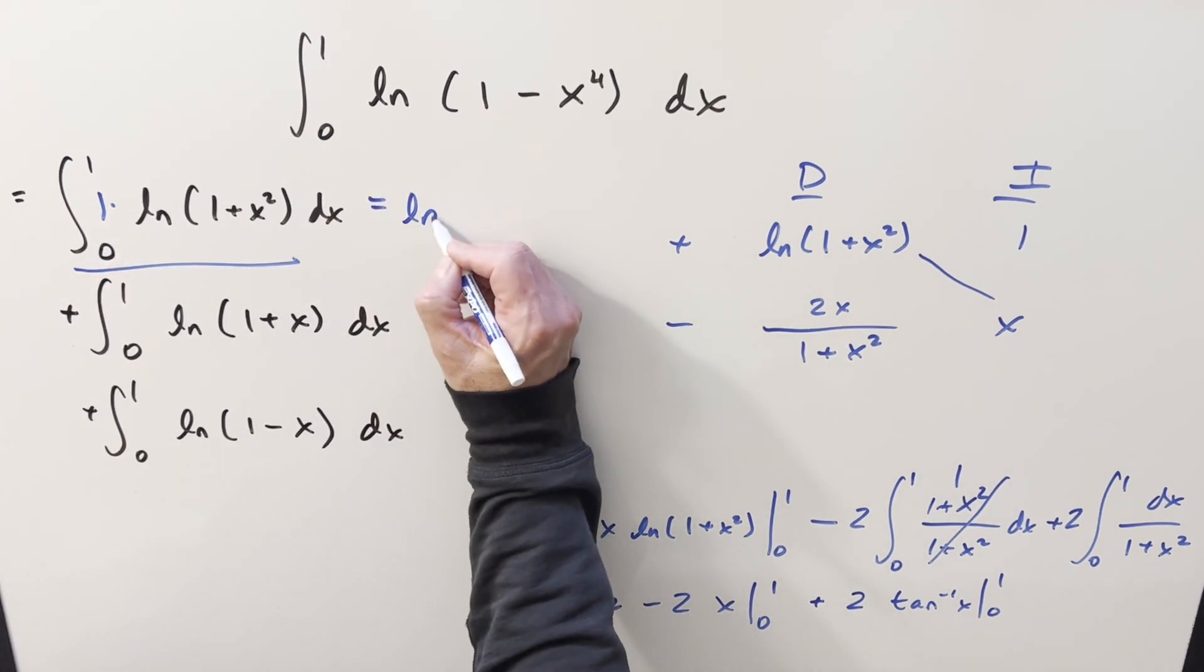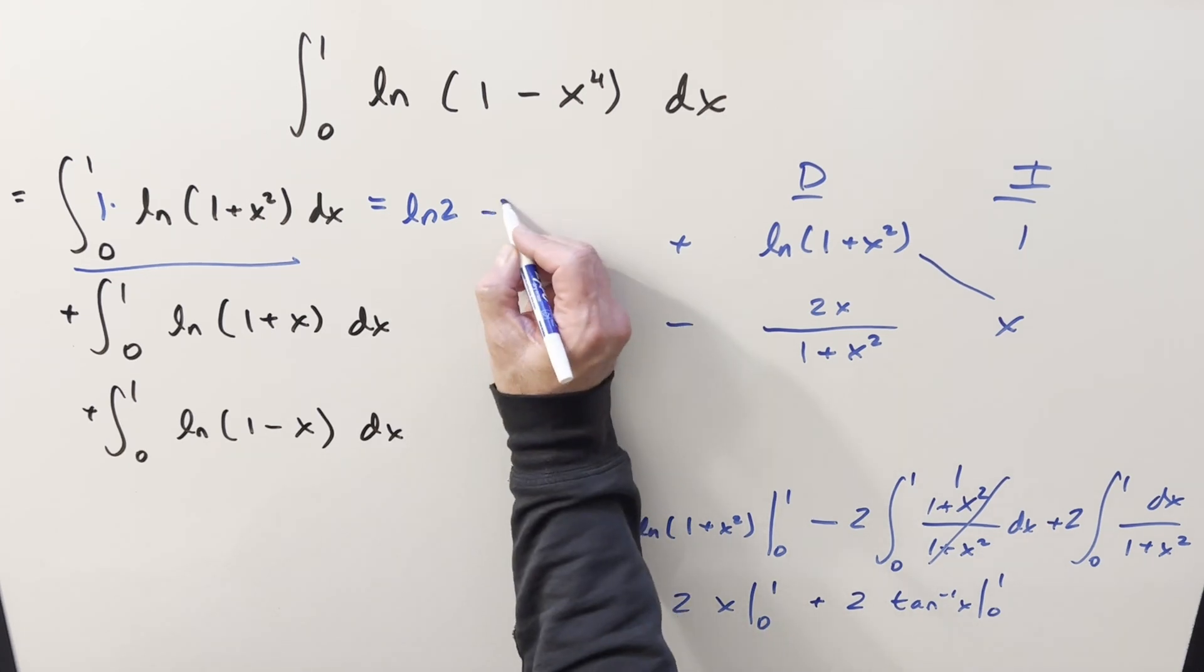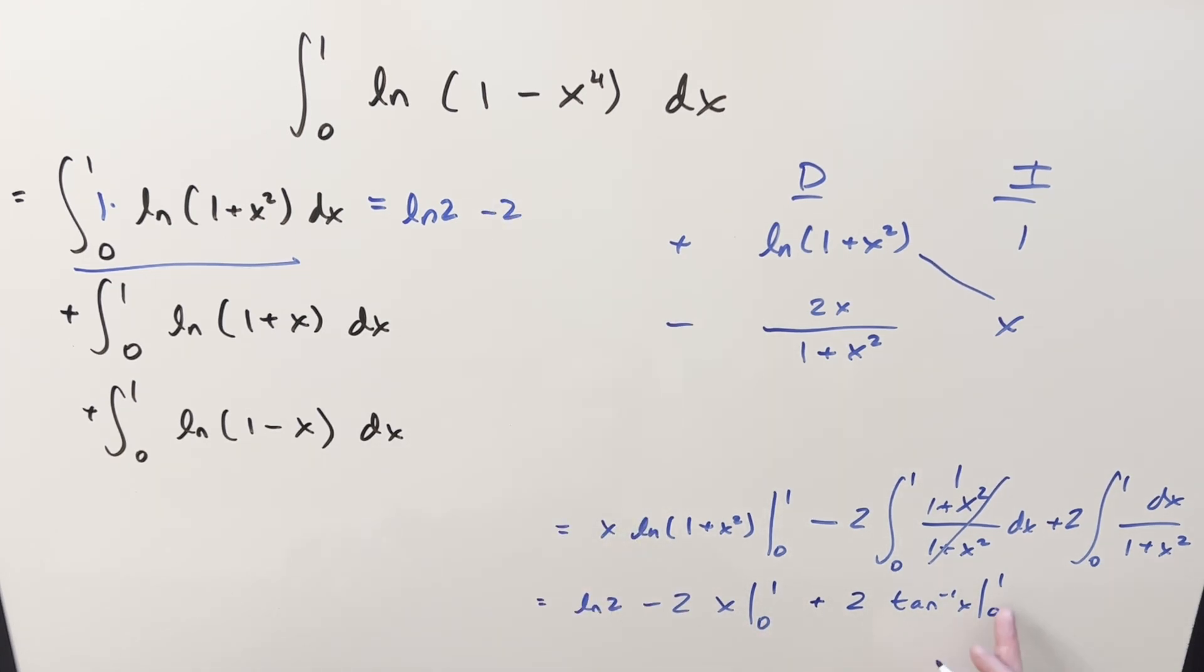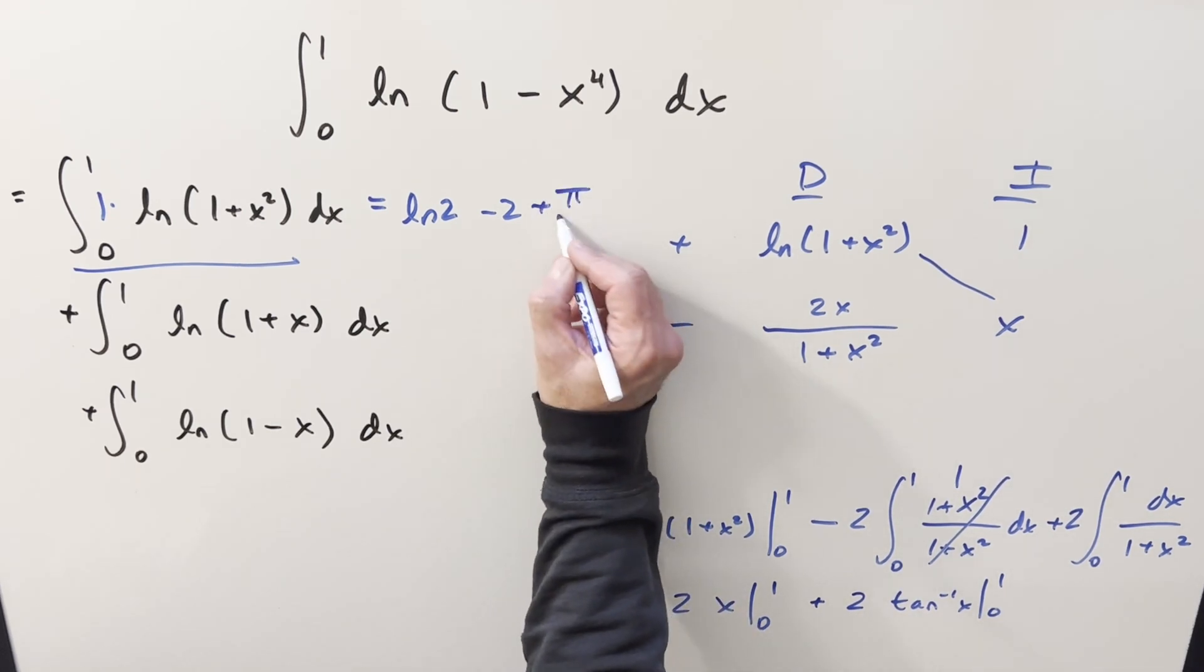So this is going to be natural log of two. Evaluating minus two, we plug a one and we just have a minus two. And then arctan at zero is zero, you plug one in, you get pi over four. Pi over four times two is going to be plus pi over two.